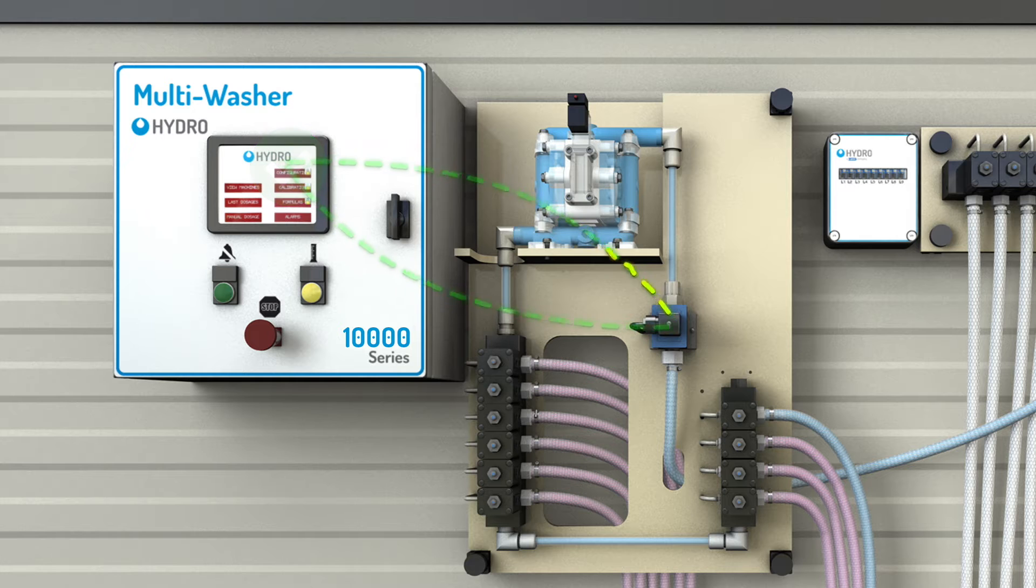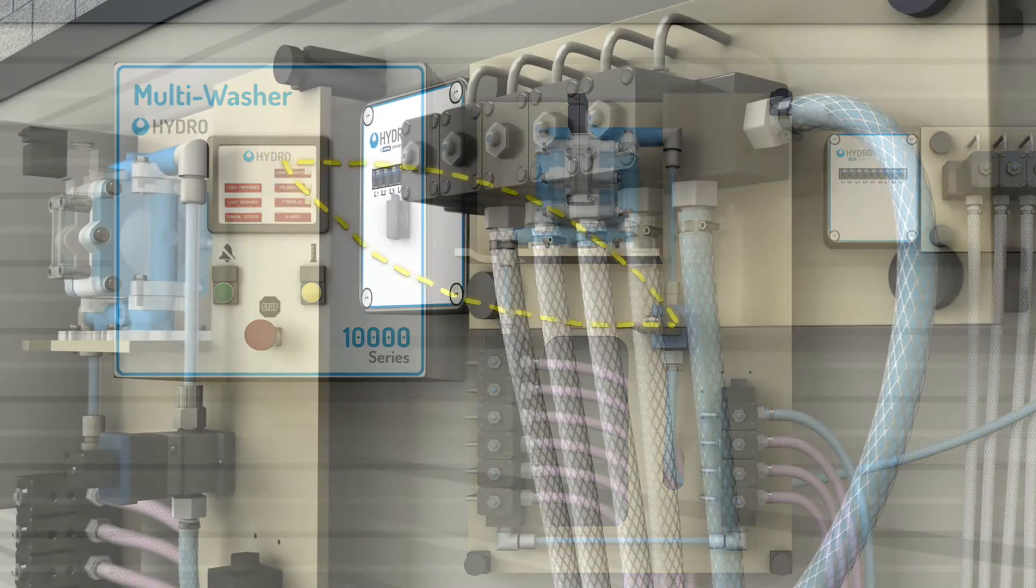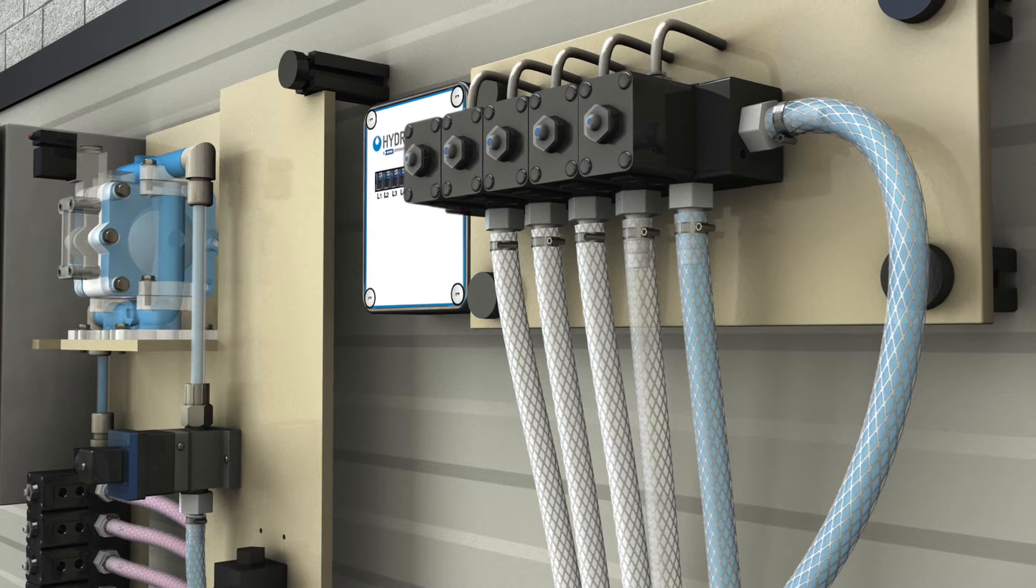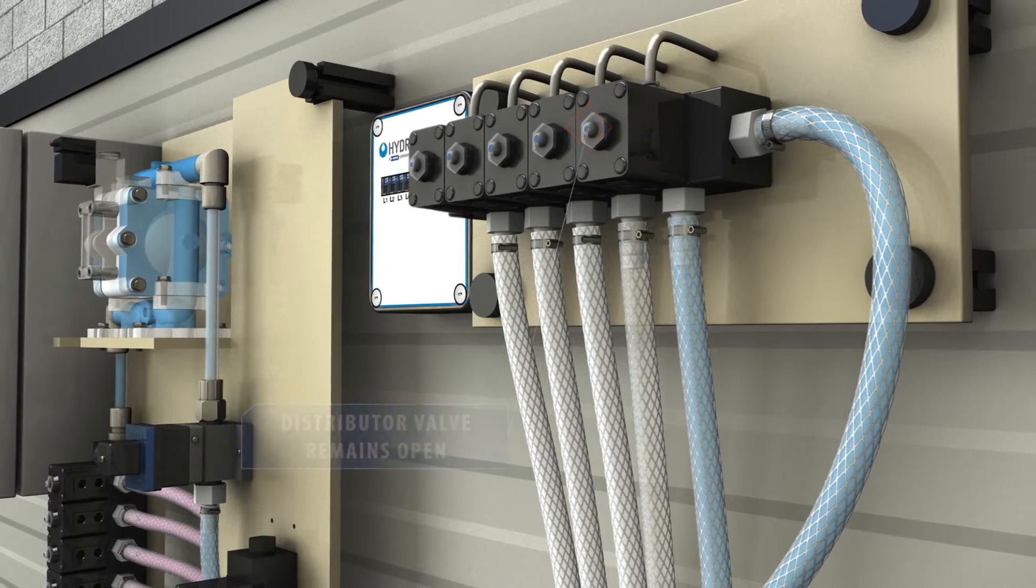If the correct number of pulses are not detected during the test, the test is failed and the dosage is aborted and an alarm is activated. After a successful water test, the distributor valve to the washer remains open while the water valve on the collector closes.